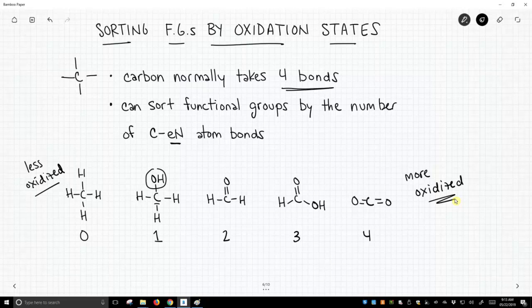But this is how I tend to think of functional groups. I sort them into these boxes. How many bonds to an electronegative atom does the carbon have? And it's going to be a number from zero to four.